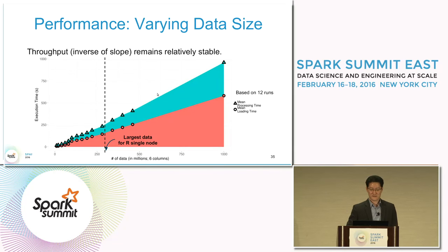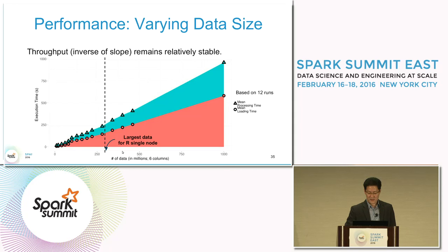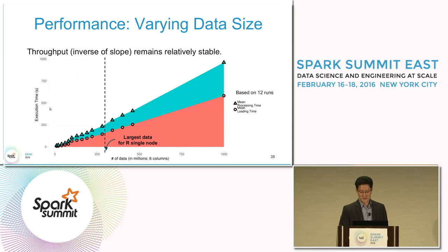This slide shows performance with varying data sizes. The x-axis is the number of data elements in millions with six columns, and the y-axis is the execution time in seconds. The execution time is broken down into two parts: loading time shown in reddish color and processing time in greenish color.